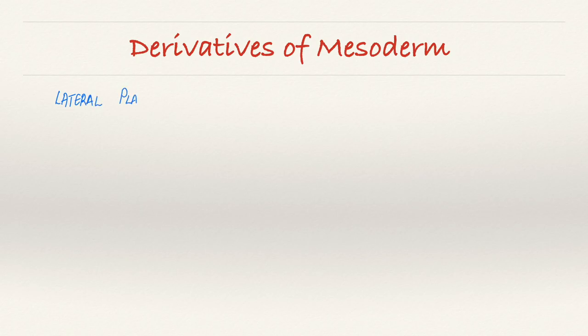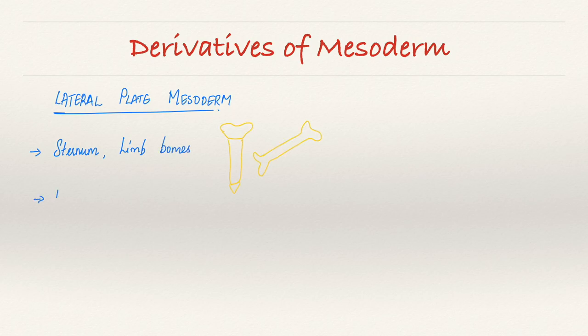The lateral plate mesoderm splits into the parietal and the visceral layers. The formation of these layers starts with the appearance of the intercellular cavities. It initially forms the sternum and the lymph wounds. The parietal layer forms the pleura, pericardium and the peritoneum within the body.